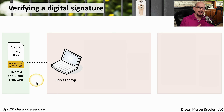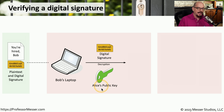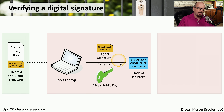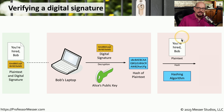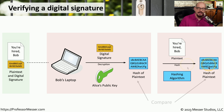Alice sends that message to Bob via email or some other electronic delivery. Bob receives exactly the message that was sent — 'you're hired, Bob' — with the digital signature included. Bob uses Alice's public key, which is available to anybody, and examines the digital signature, decrypting it using that public key. Once decryption takes place, he has the original hash that was created of the plain text message. Bob then wants to see if the hash from the digital signature matches the hash of what he received, so he performs the same hashing function Alice originally performed — taking the plain text and running it through the same hashing algorithm to produce his own hash.